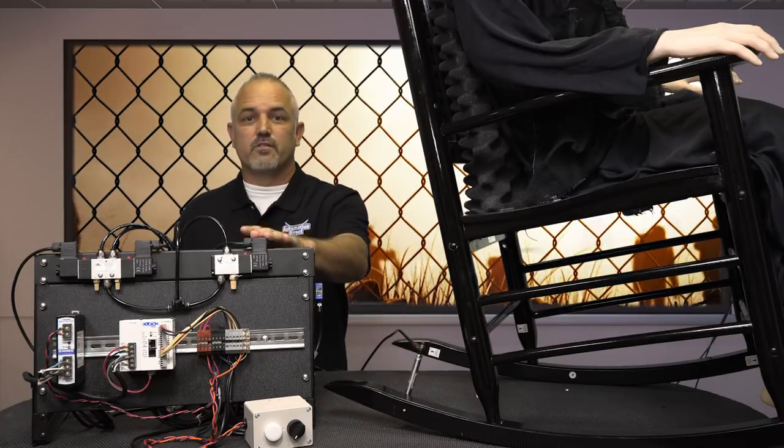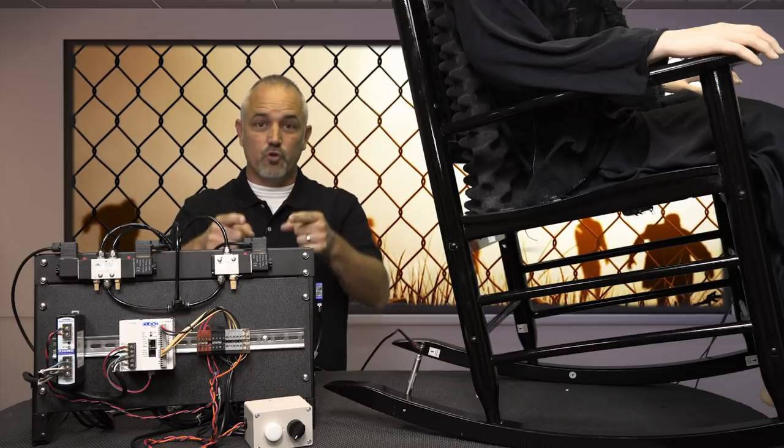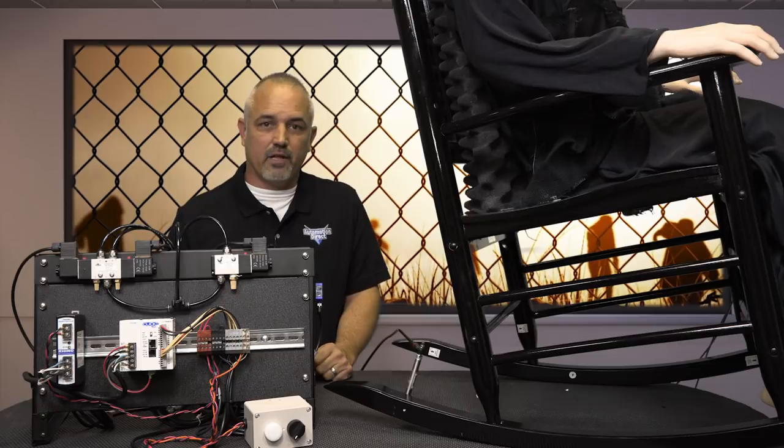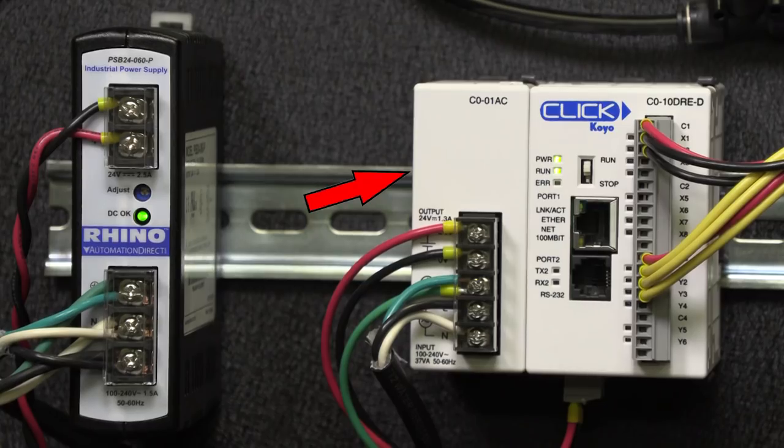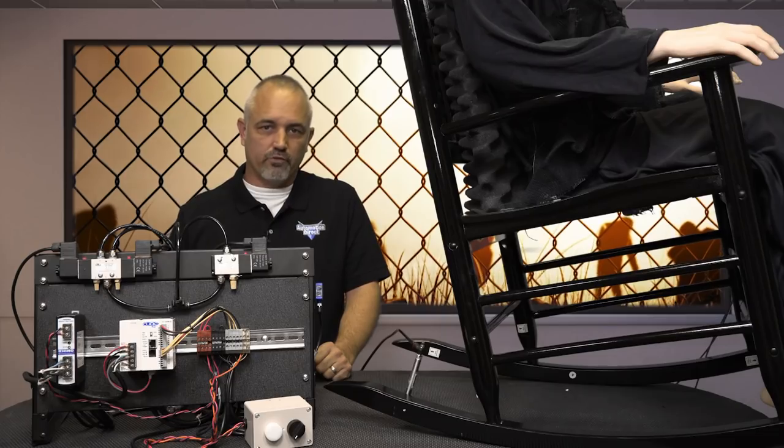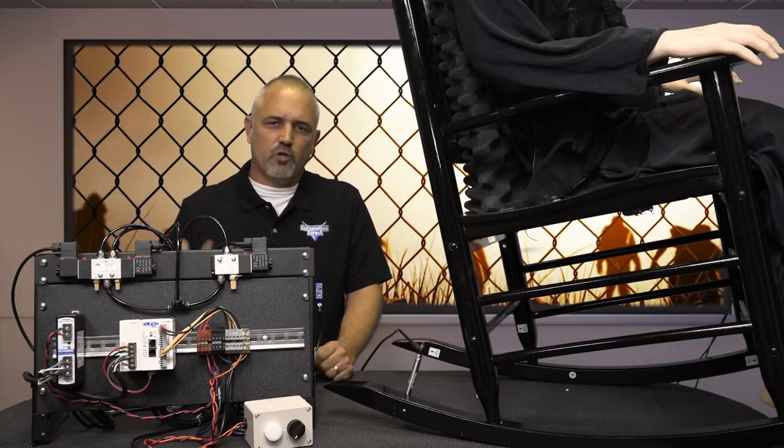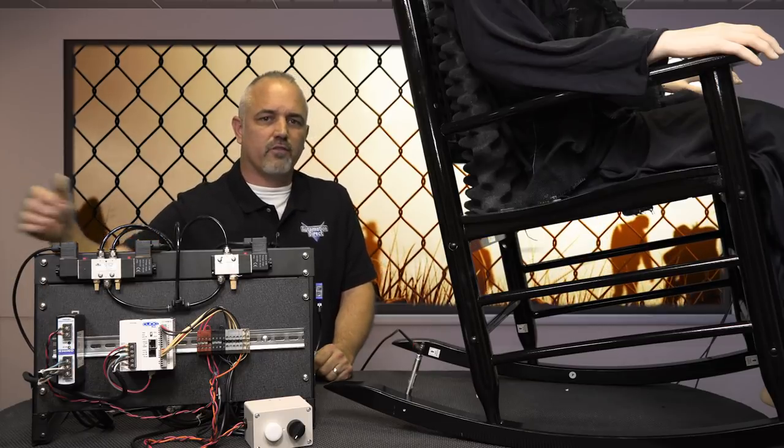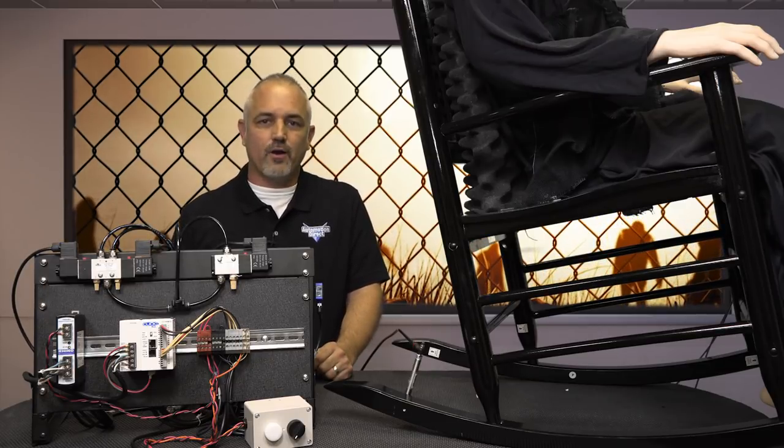These are inexpensive, easy to use and will save you money and headaches in the long run. Since we have 120 volts AC supply voltage, we need to use this Click power supply because the Click PLC requires 24 volts DC to operate. You may be thinking, why didn't we omit this part and just power our Click PLC from the main 24 volts DC Rhino power supply. Well, we could have.